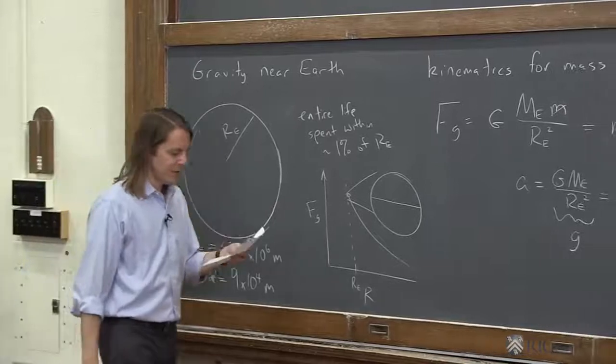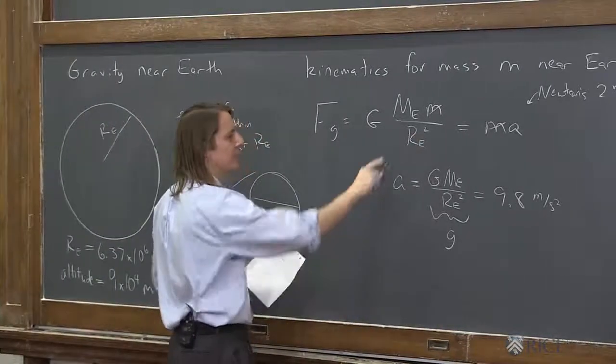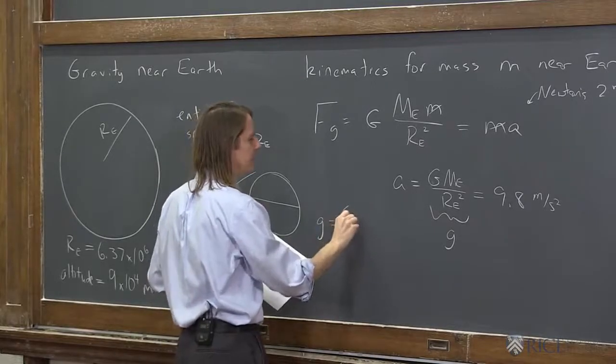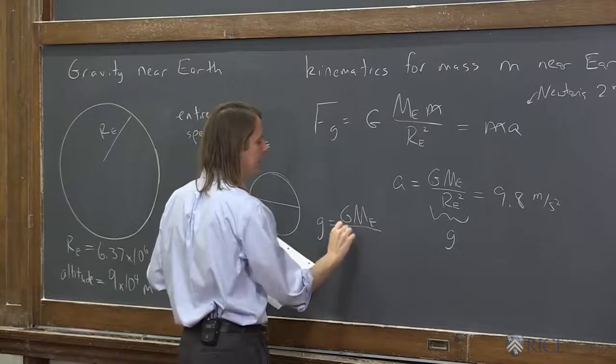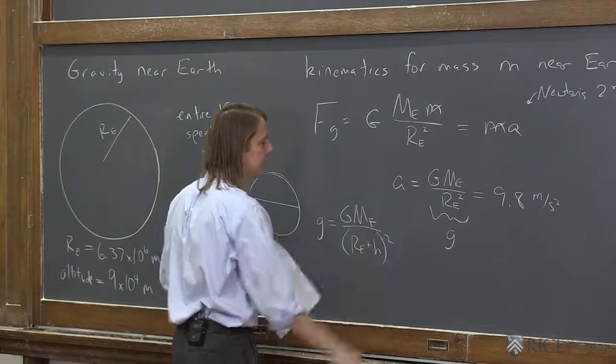So what you would do to get that is instead of saying I live only at Re, you should put a small number in. You would say the gravitational constant is G Me over the radius of the Earth plus my altitude H squared.